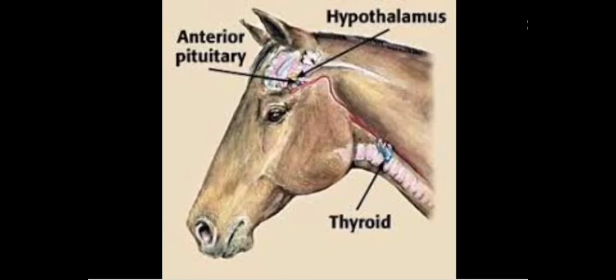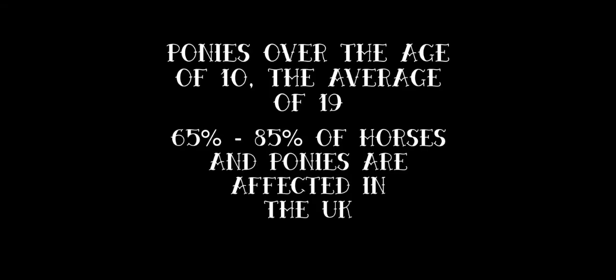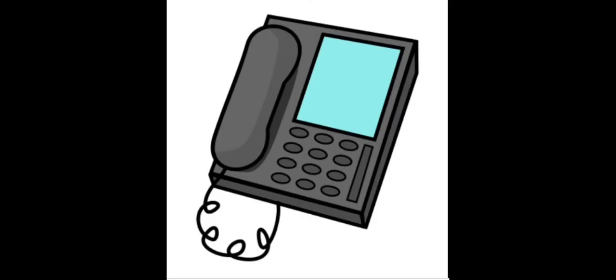Number nine: Cushing's disease. Cushing's disease is a tumour found in the pituitary gland, a small pea-sized gland in the brain. The tumour damages the gland, causing excessive hormones to be produced and released through the body. As a result, a horse with Cushing's disease will have increased coat length, delayed winter shedding, be very tired, may have laminitis, increased sweating, weight loss, and increased drinking and urinating. The disease most commonly affects horses or ponies over the age of 10, with an average age of 19. 65 to 85 percent of horses and ponies are affected in the UK. If you suspect your horse has Cushing's disease, call your vet immediately as some cases result in death.